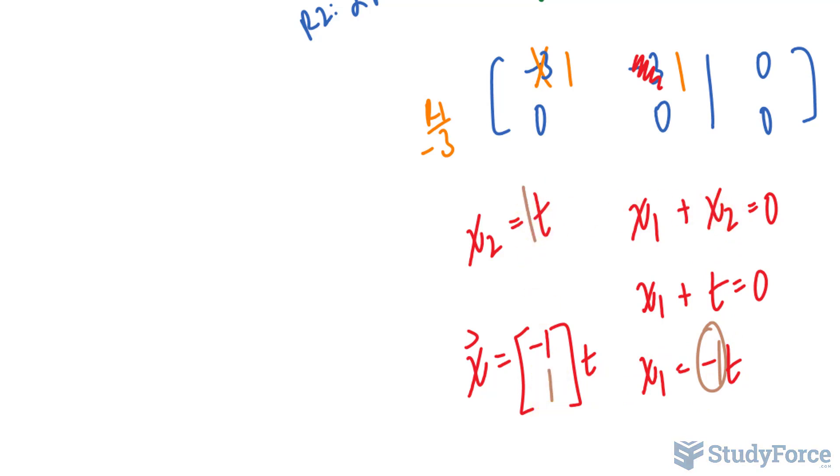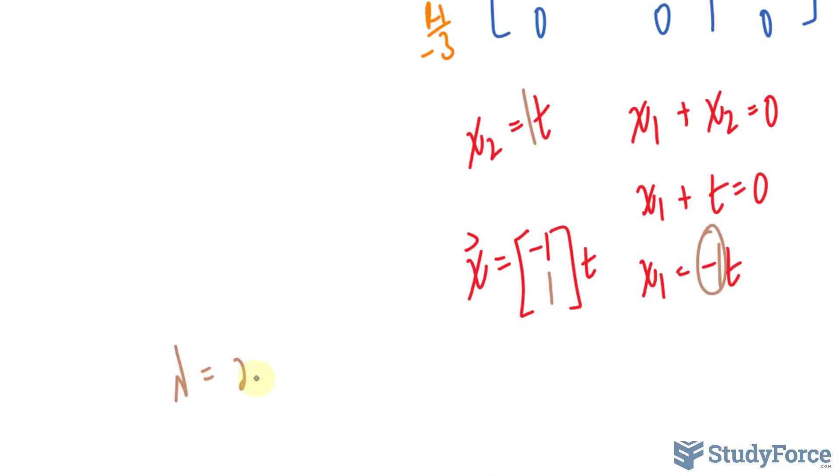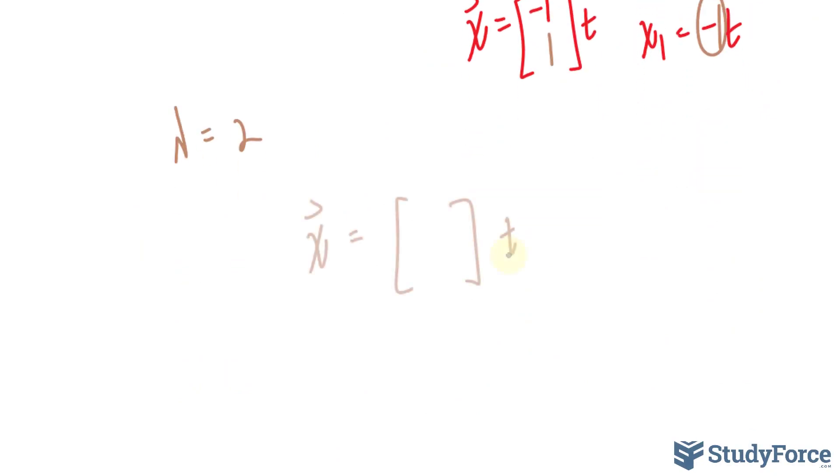I have to redo this process for lambda when it is 2. I'm going to skip this process because I'm assuming that you already know how to do this. If I redo this process for 2, I should end up with the eigenvector negative 1 over 2 and 1. Multiplying the first and second row by 2 gives me negative 1, 2. This will serve as my eigenvector for the eigenvalue of 2.